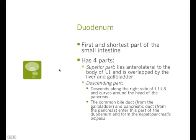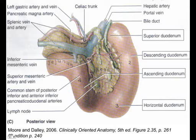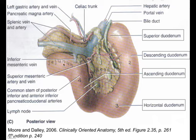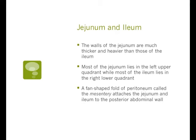The duodenum is the first and shortest part of the small intestine, with four parts: superior, descending, horizontal, and a fourth part — you don't need to know those in detail. The walls of the jejunum are much thicker and heavier than those of the ileum. Most of the jejunum lies in the upper left quadrant, while most of the ileum lies in the lower right quadrant — that you will need to know.